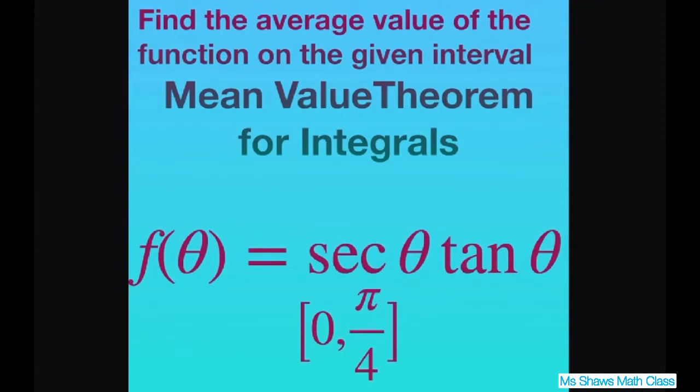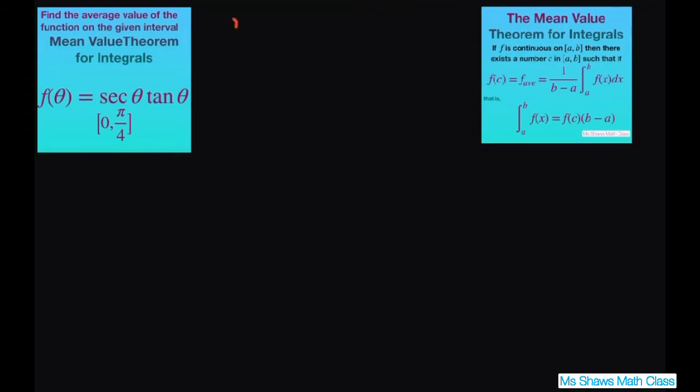Our function is f of theta and our interval is 0 to pi divided by 4. So our a equals 0 and our b equals pi divided by 4 if we use our closed interval here. And this is the formula but we're just doing our f average so we already have it like that.